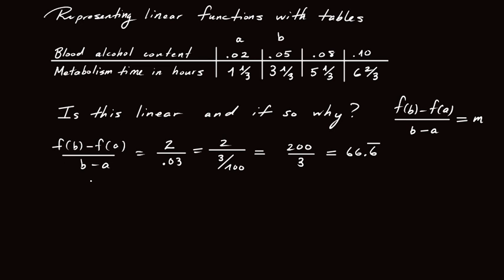So that's an example of an average rate of change computation. That's with the choice of a equals 0.02 and b equals 0.05. Of course, to know that the function's linear, I have to know that no matter what I choose for a and b, I always get this number 66.6 repeating.